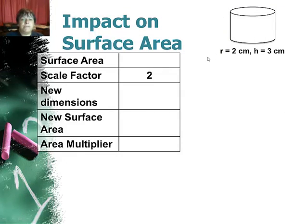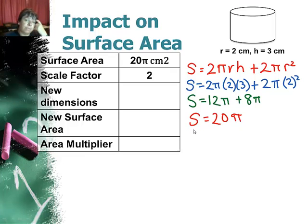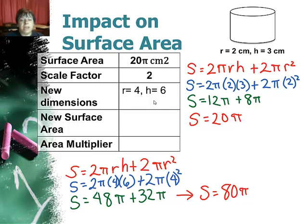I have a cylinder here and I gave the radius and the height, and we're going to find the surface area using the formula for a cylinder. Substituting the radius and the height, I get that the surface area is 20π cm². Now I'm going to apply a scale factor of 2 to all the dimensions. So now the radius is 4 cm and the height is 6 cm. Well, I'm still using the same formula, I just have different numbers, and I end up getting a surface area of 80π.